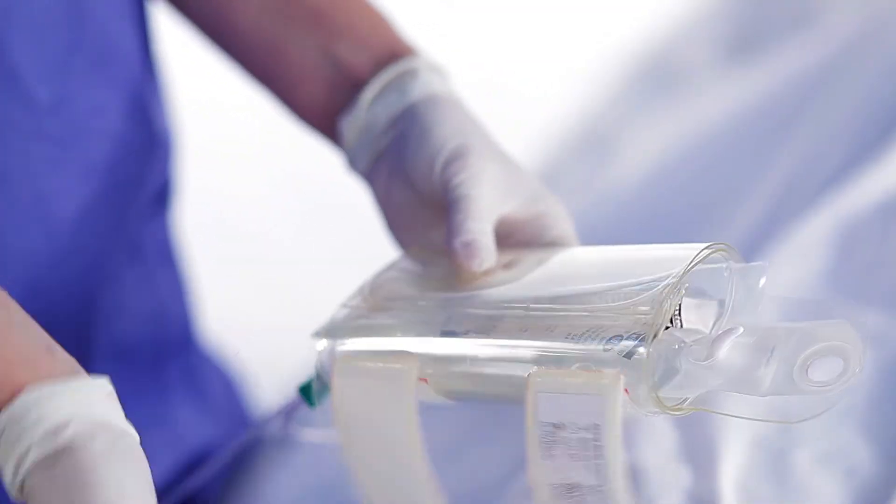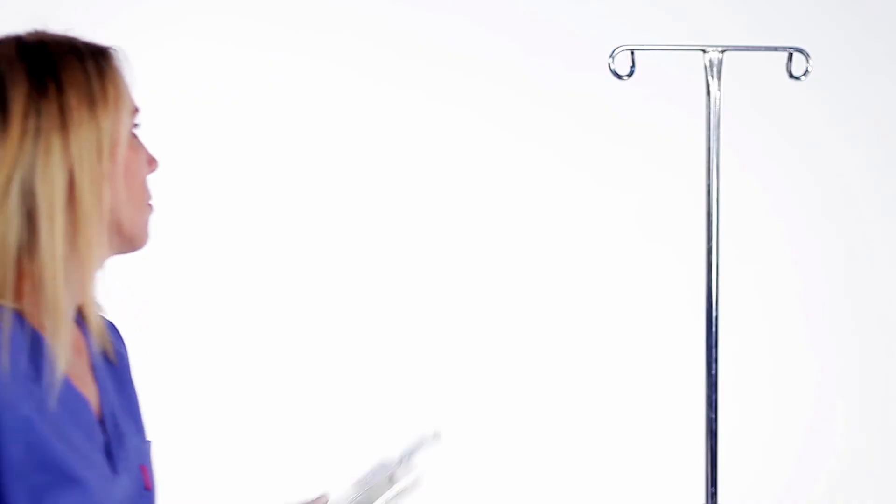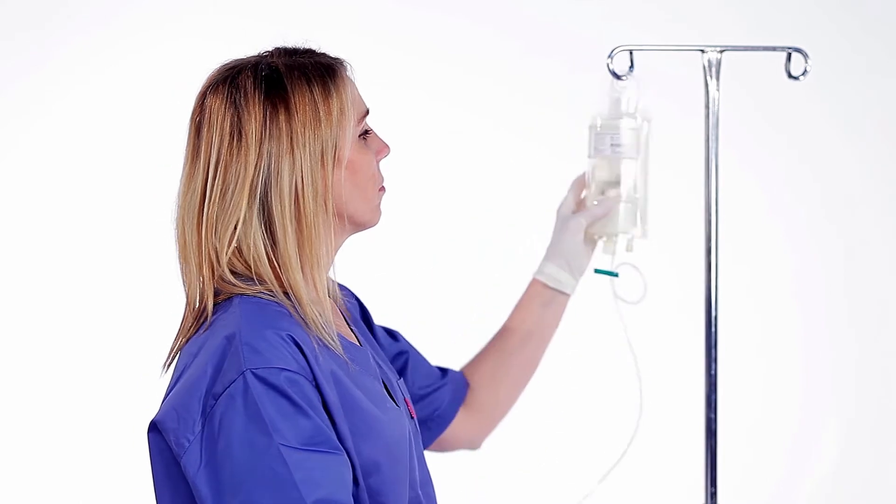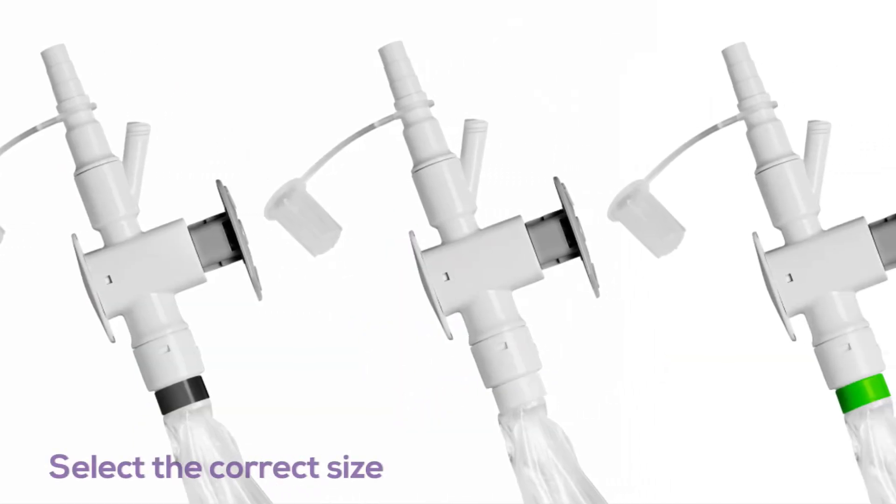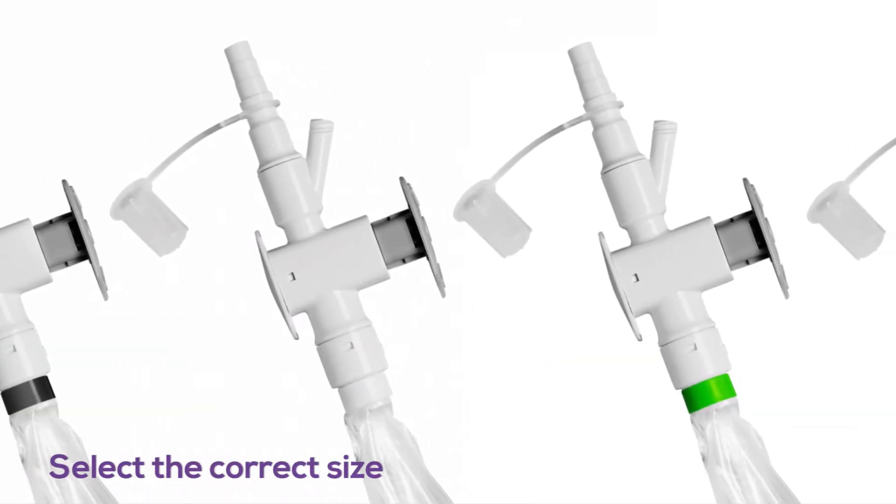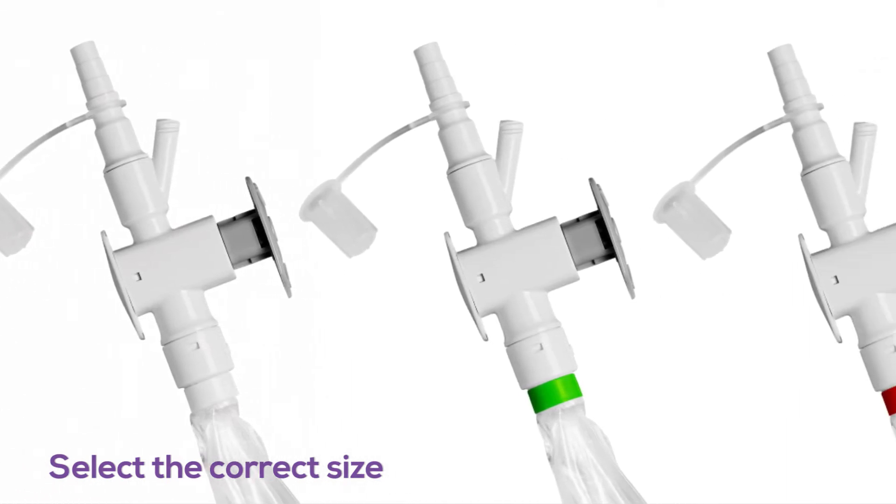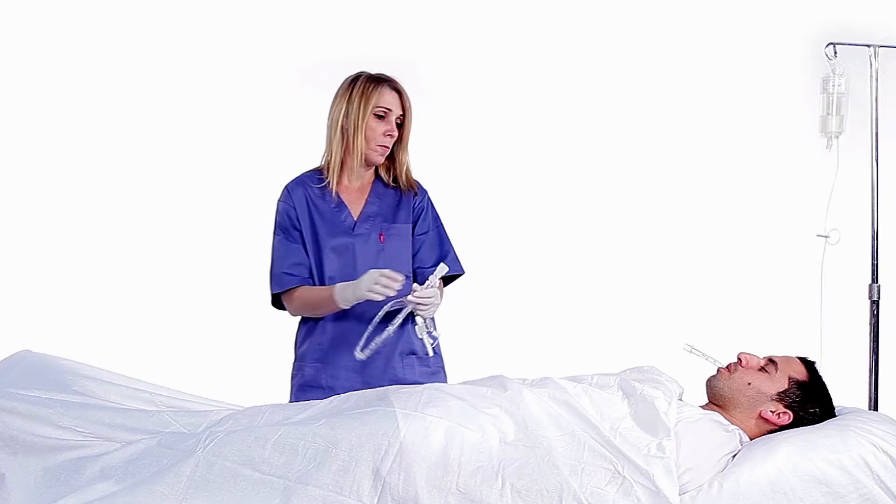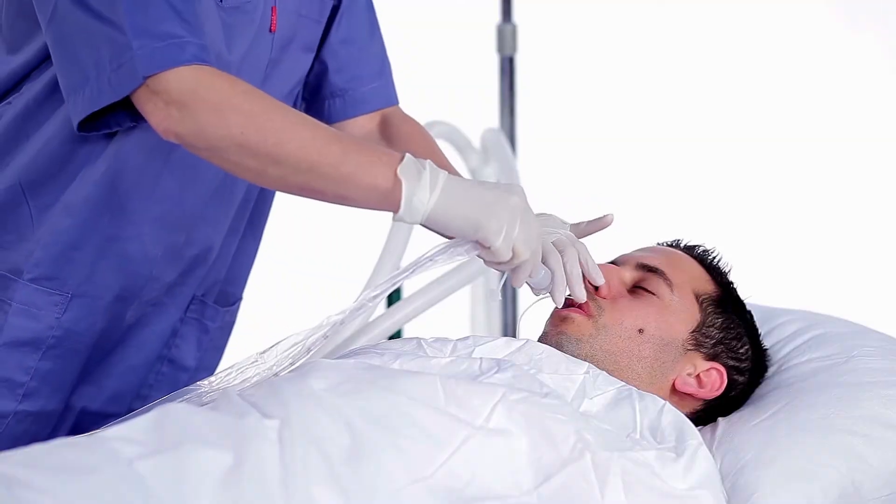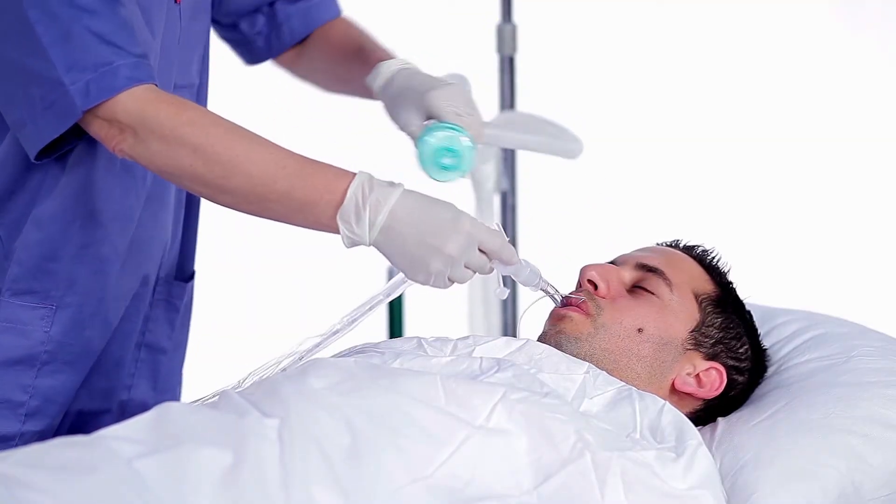To set up the system, insert a standard 100 milliliter saline bag into the plastic pressure bag and hang the pressure bag on the IV stand. Select the appropriate Airway Medics—there are four sizes corresponding to the patient's endotracheal tube.